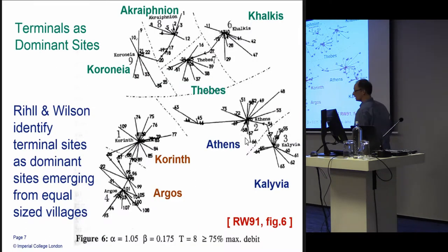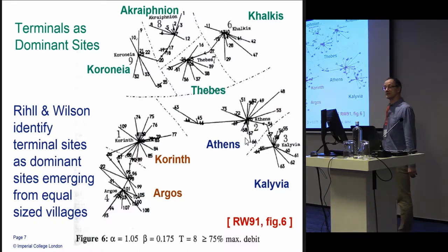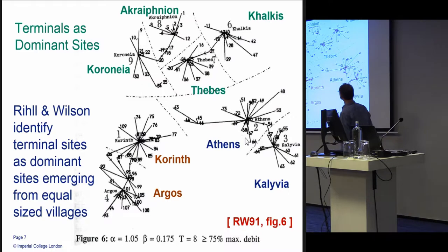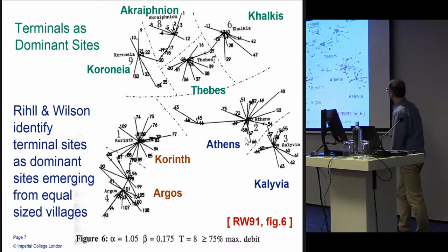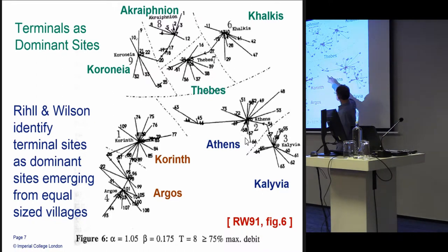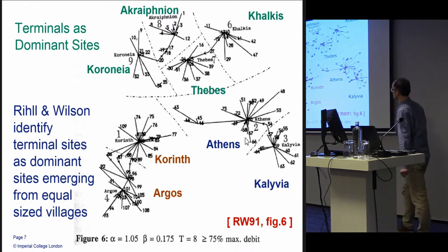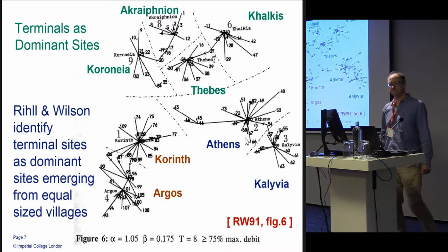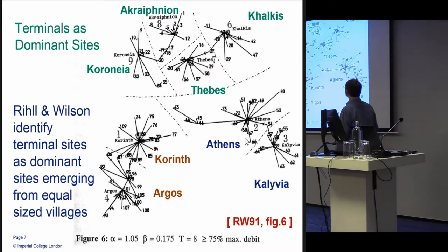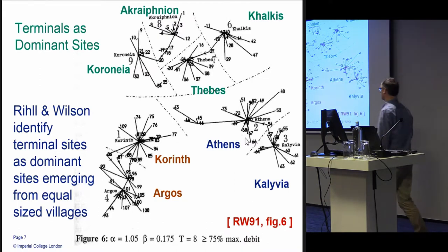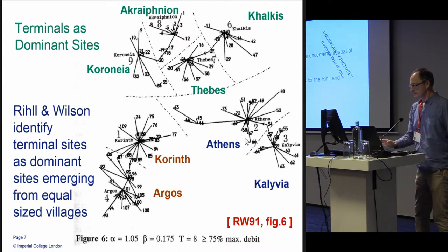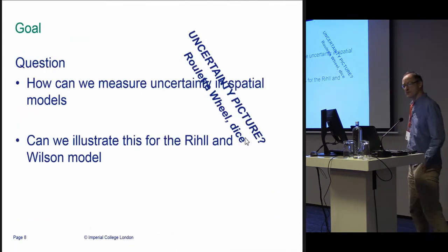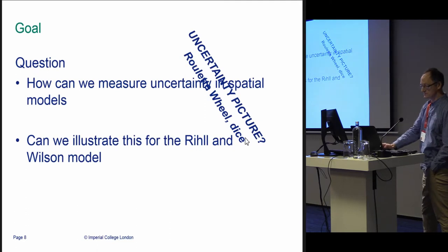Now, the way that Rihil and Wilson identify their dominant sites, there's something that they call terminal sites. In their paper you get a picture a bit like this—not exactly a network, but pretty much most sites have a single line to their neighboring big site. You can see just pictorially that it picks out certainly the four major sites in this case and a few other regional sites like Chalkis at the top. That's great, but this is the sort of answer you would get in their paper. So our question was: how can we measure uncertainty, and can we do this for the Rihil and Wilson model?